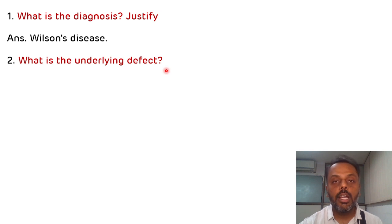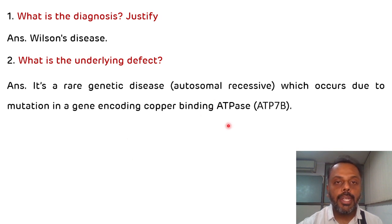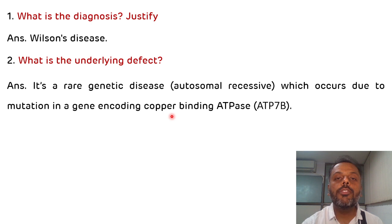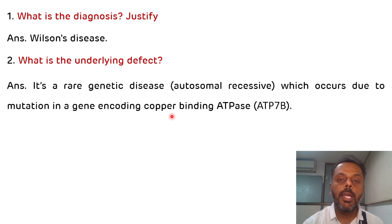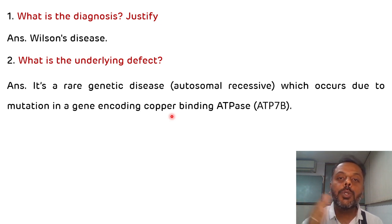The second question is: what is the underlying defect? Wilson's disease is a rare genetic defect inherited as an autosomal recessive disease, occurring due to a mutation in the gene encoding copper-binding ATPase — ATP7B. Due to this mutation, there is impaired excretion of copper from the liver into bile, resulting in accumulation of copper in the liver and brain — hence also known as hepatolenticular degeneration. The increased copper in hepatocytes causes impaired incorporation of copper into apoceruloplasmin, resulting in reduced ceruloplasmin levels.